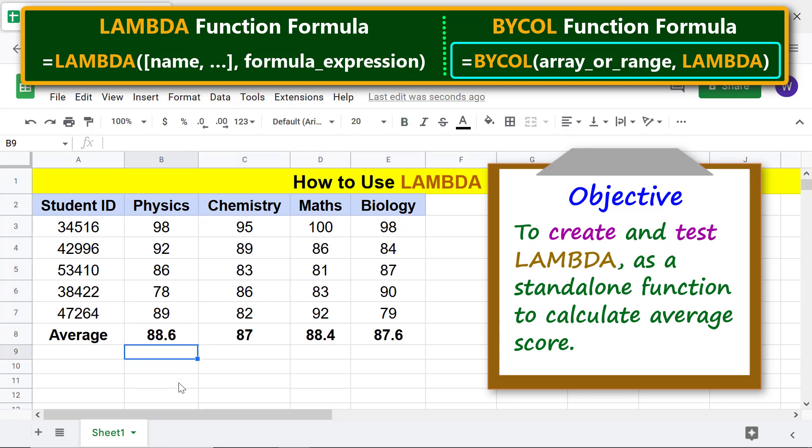There you go. BYCOL has returned the row of average scores of the four subjects in one step.